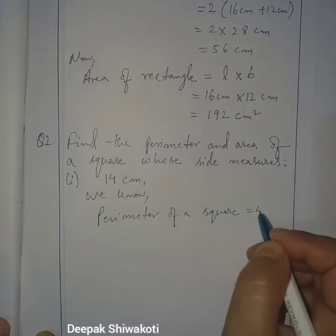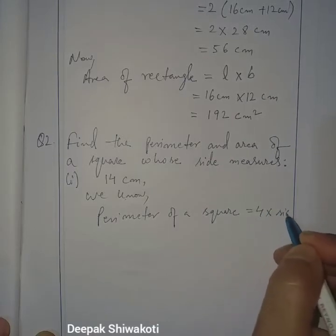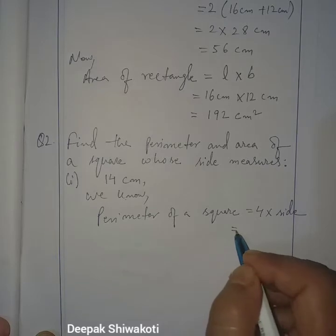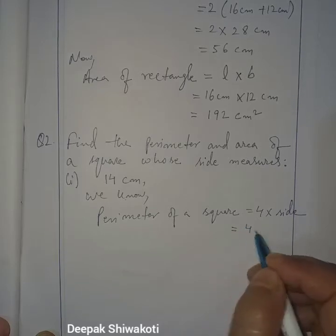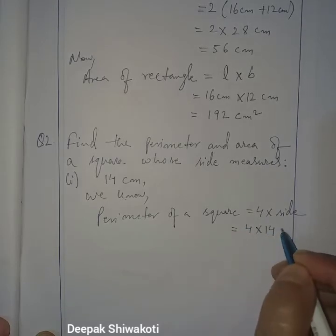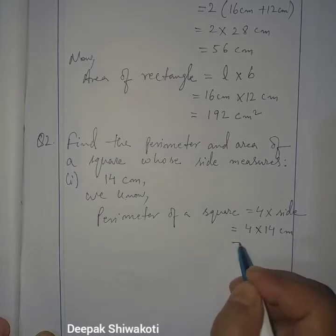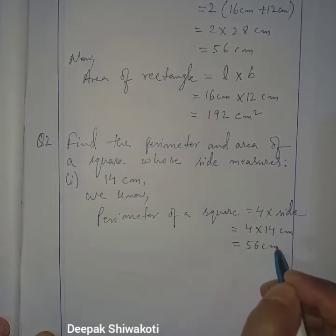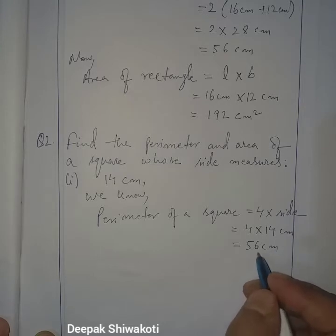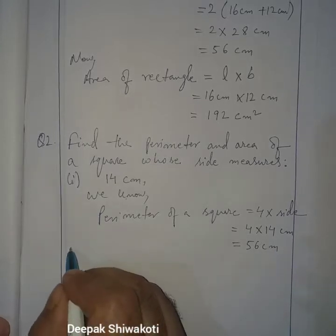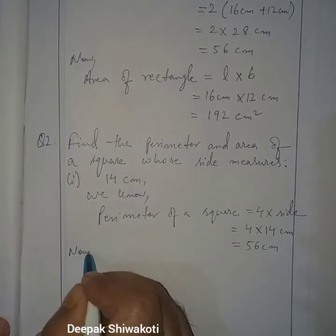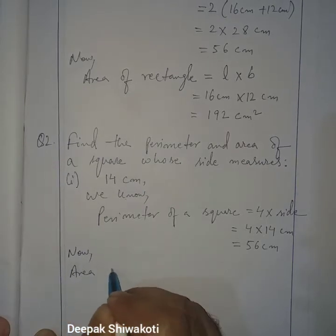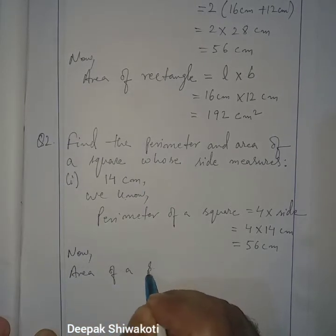Perimeter of a square is equal to 4 into side. Side is given as 14 centimeter, so 4 into 14 centimeter, which is equal to 56 centimeter. We got the perimeter of the square.